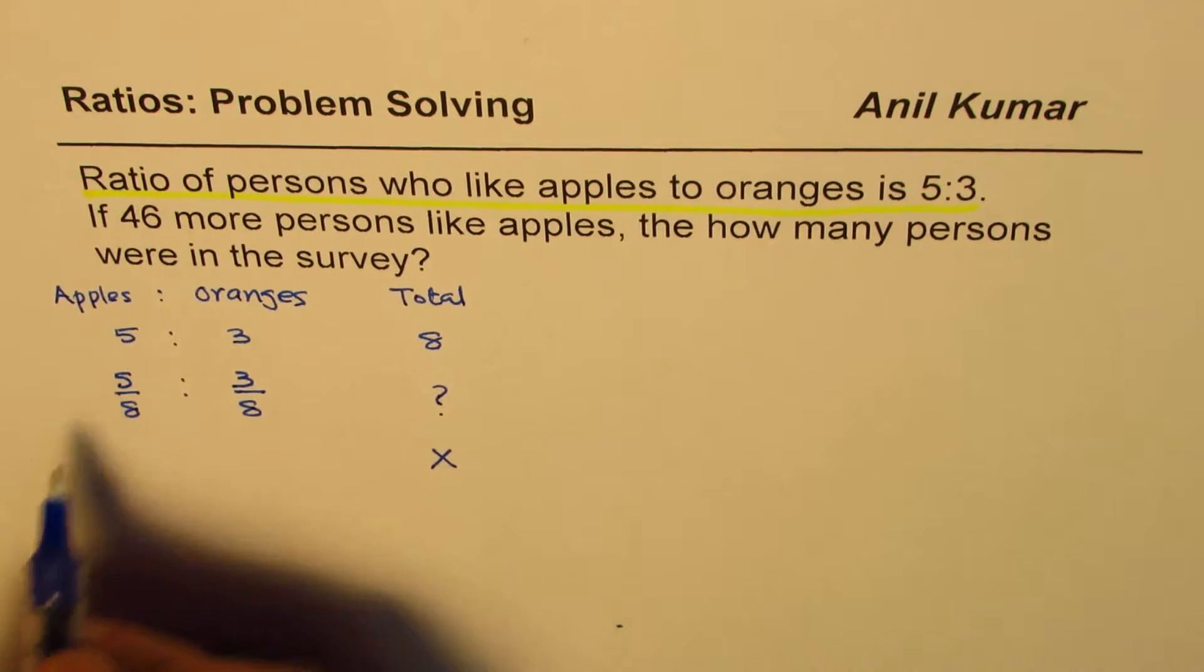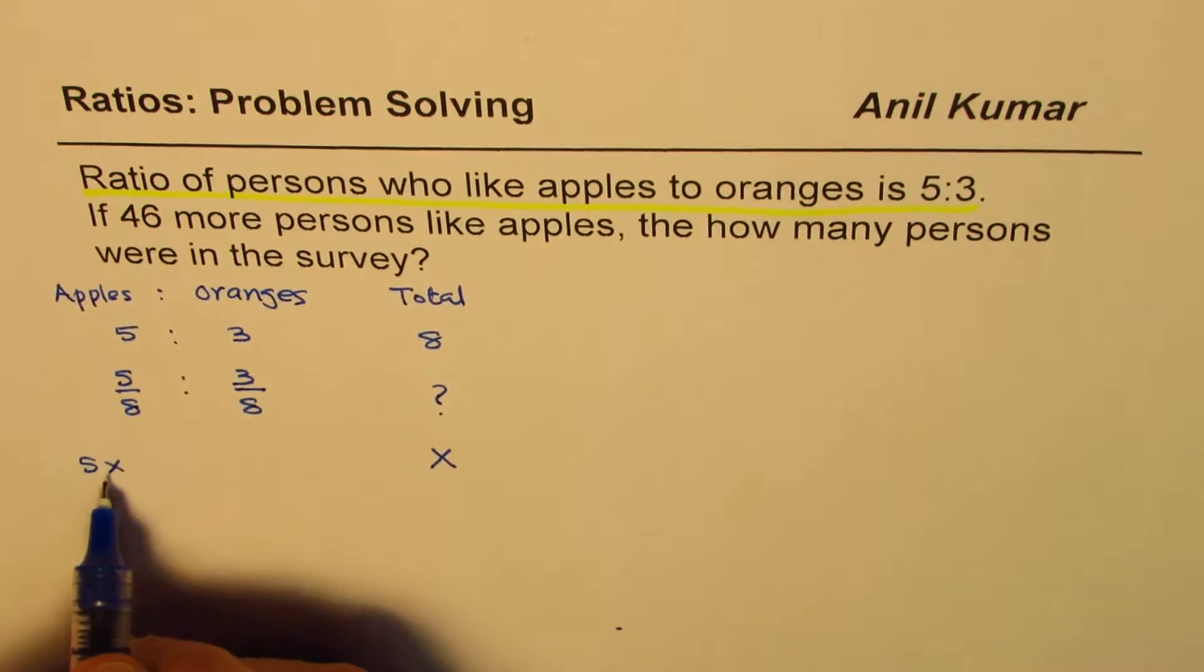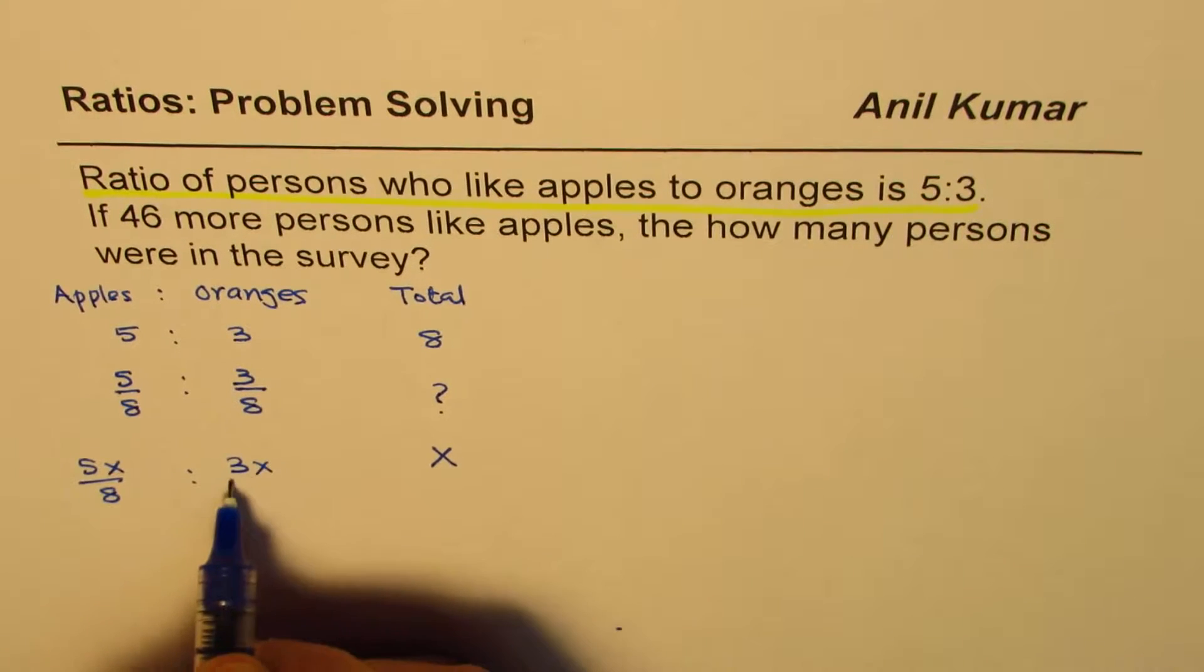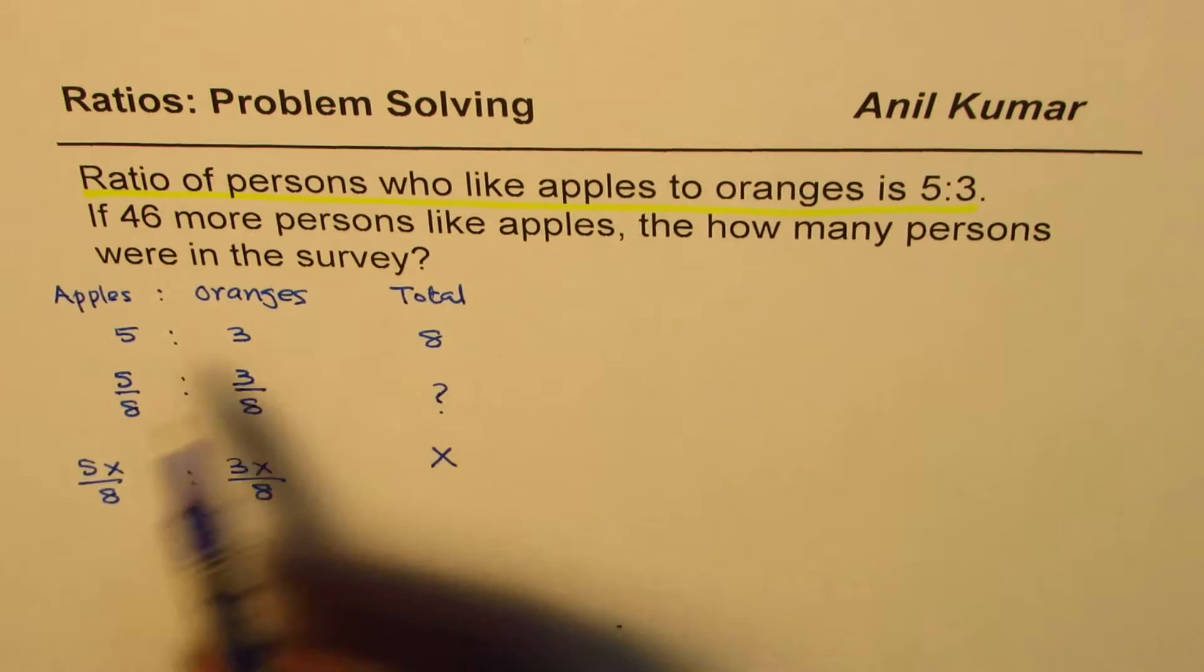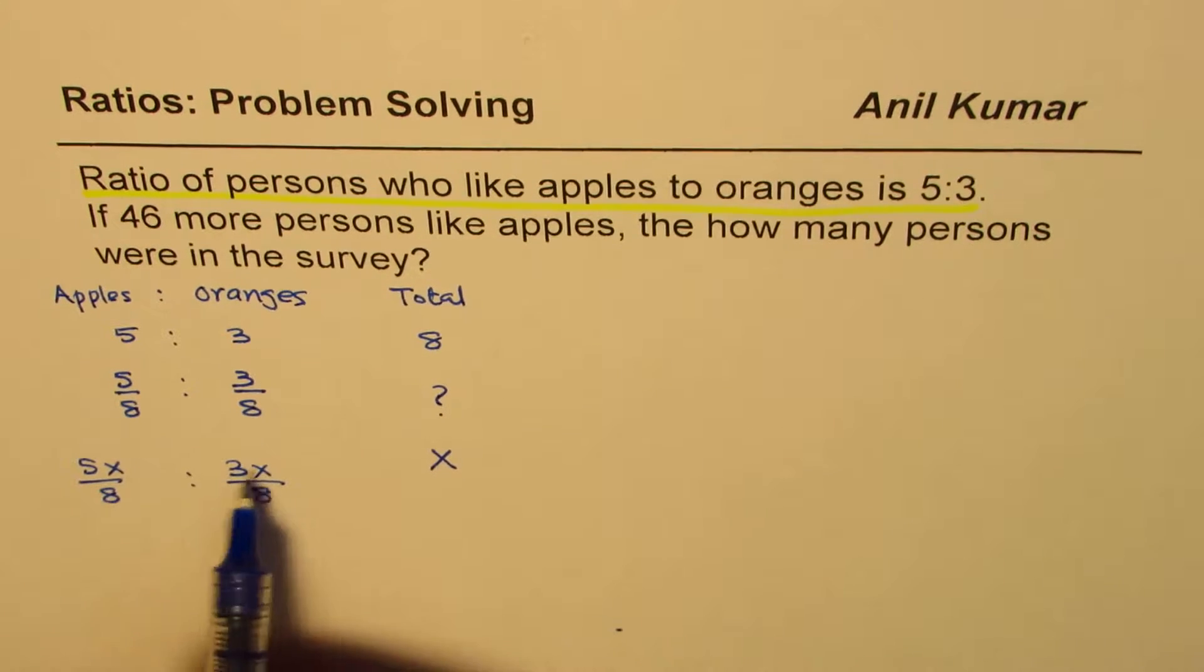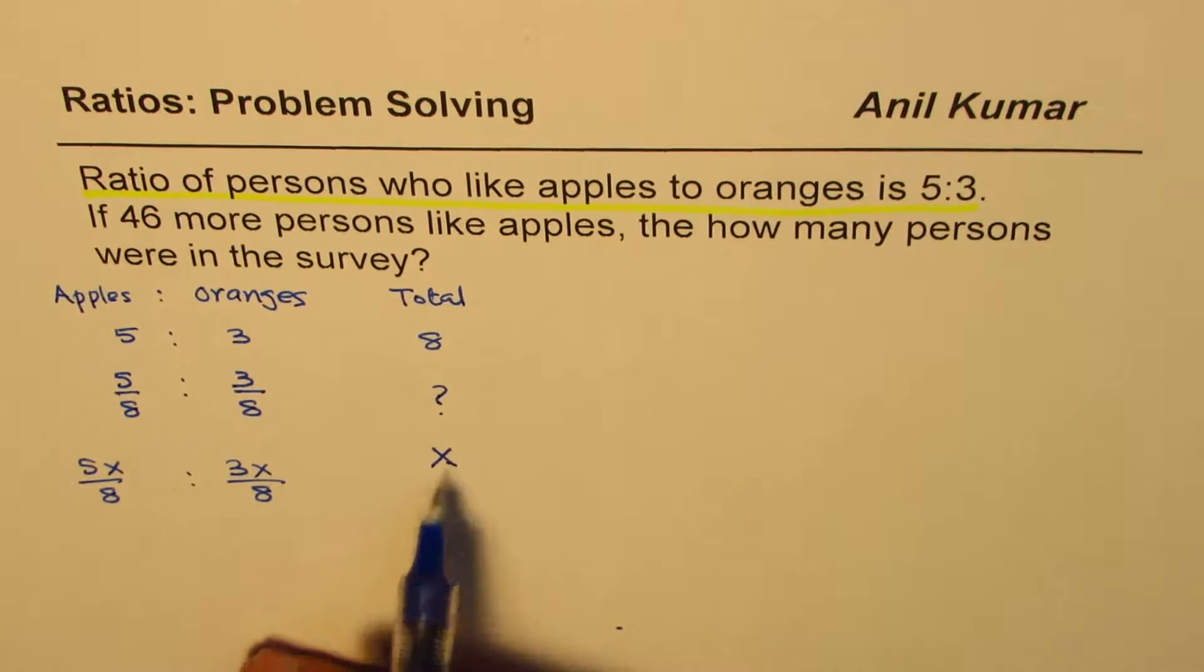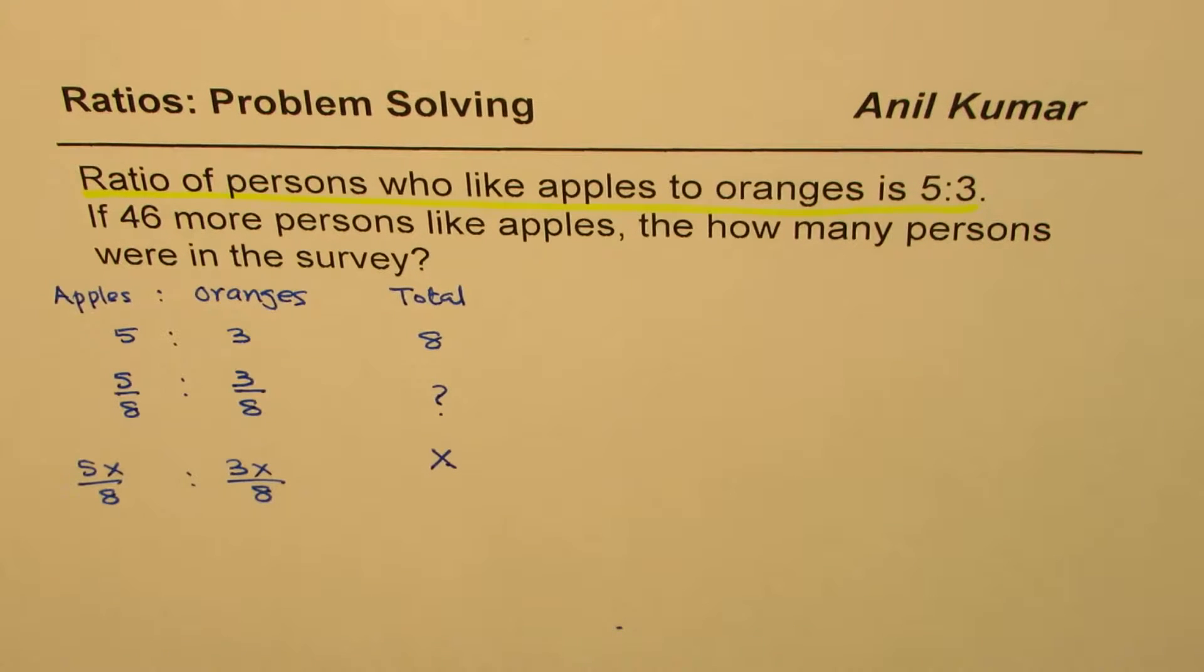So if there are X persons surveyed, then 5X out of 8 is to 3X out of 8 will like oranges and apples. If you add them up, you get 5 plus 3 is 8X, divide by 8 is X. So total is still X.